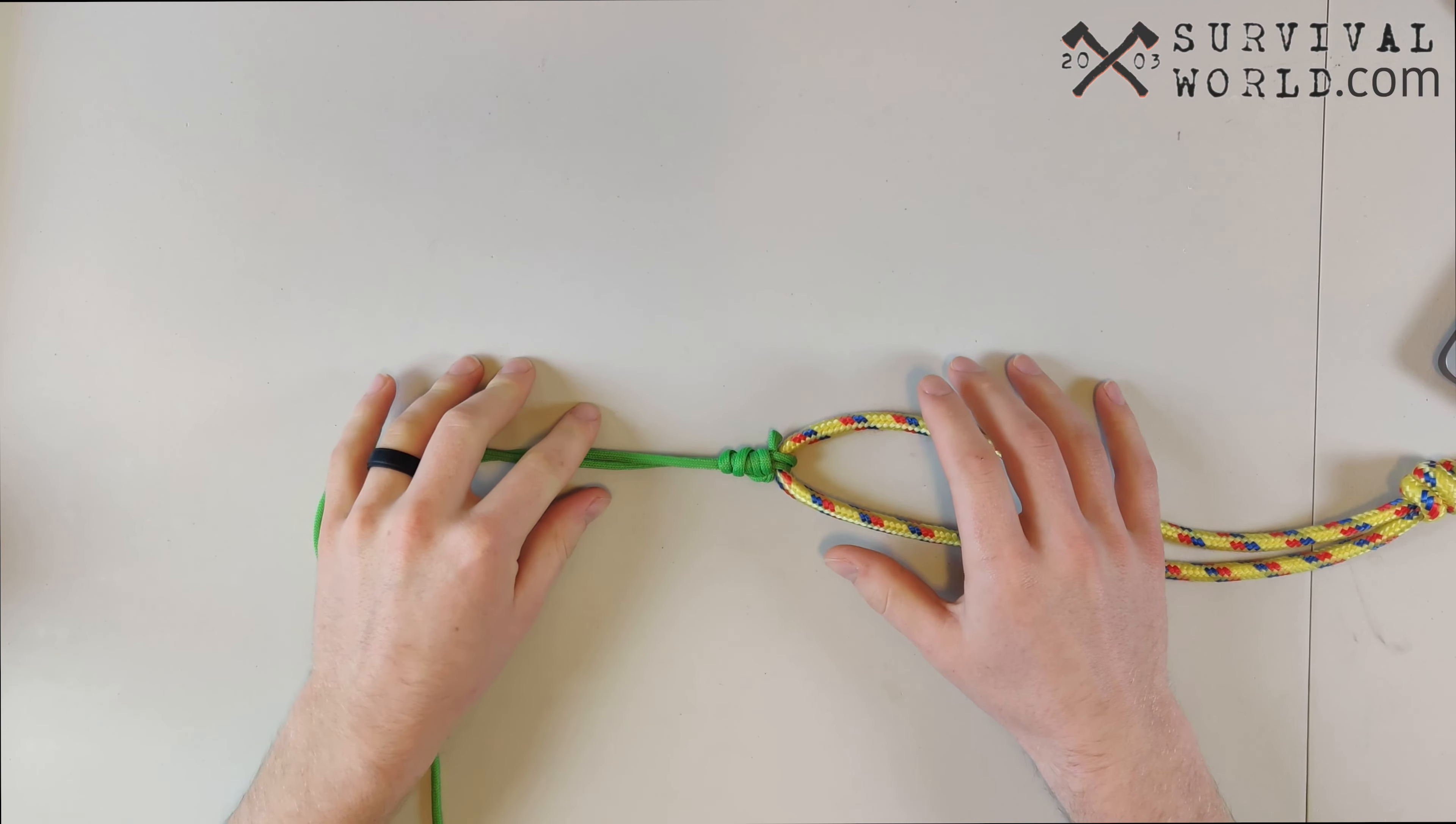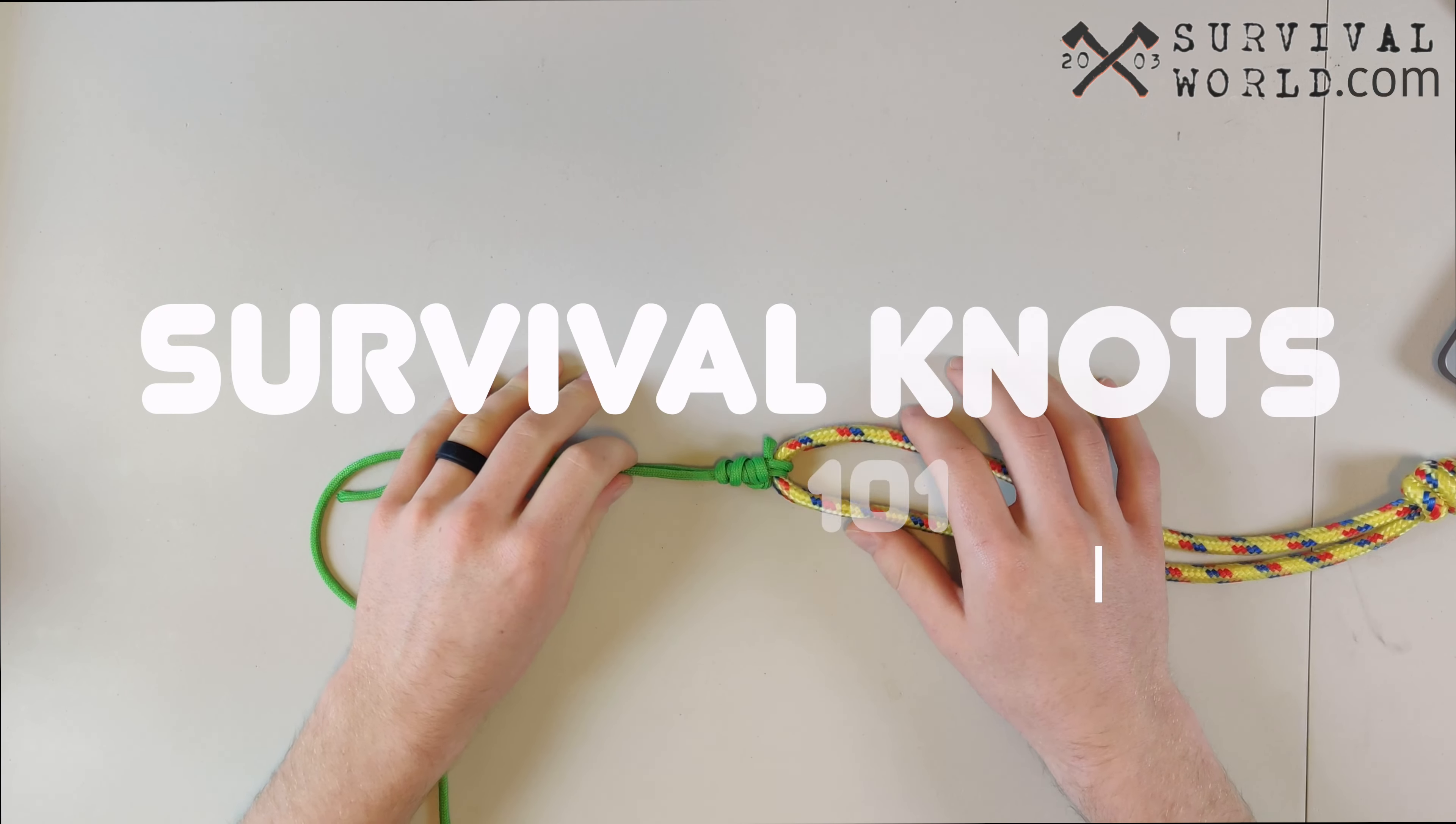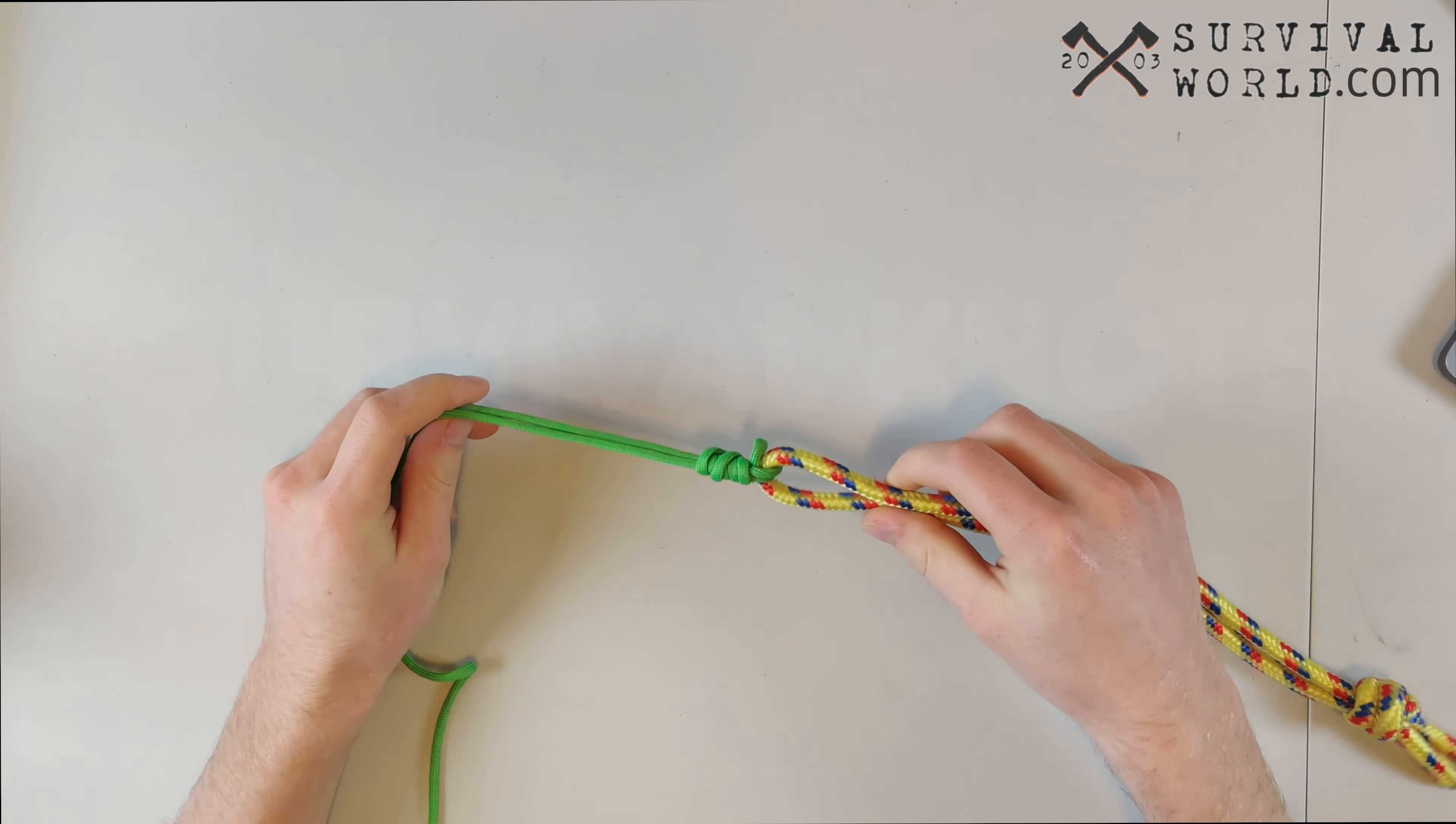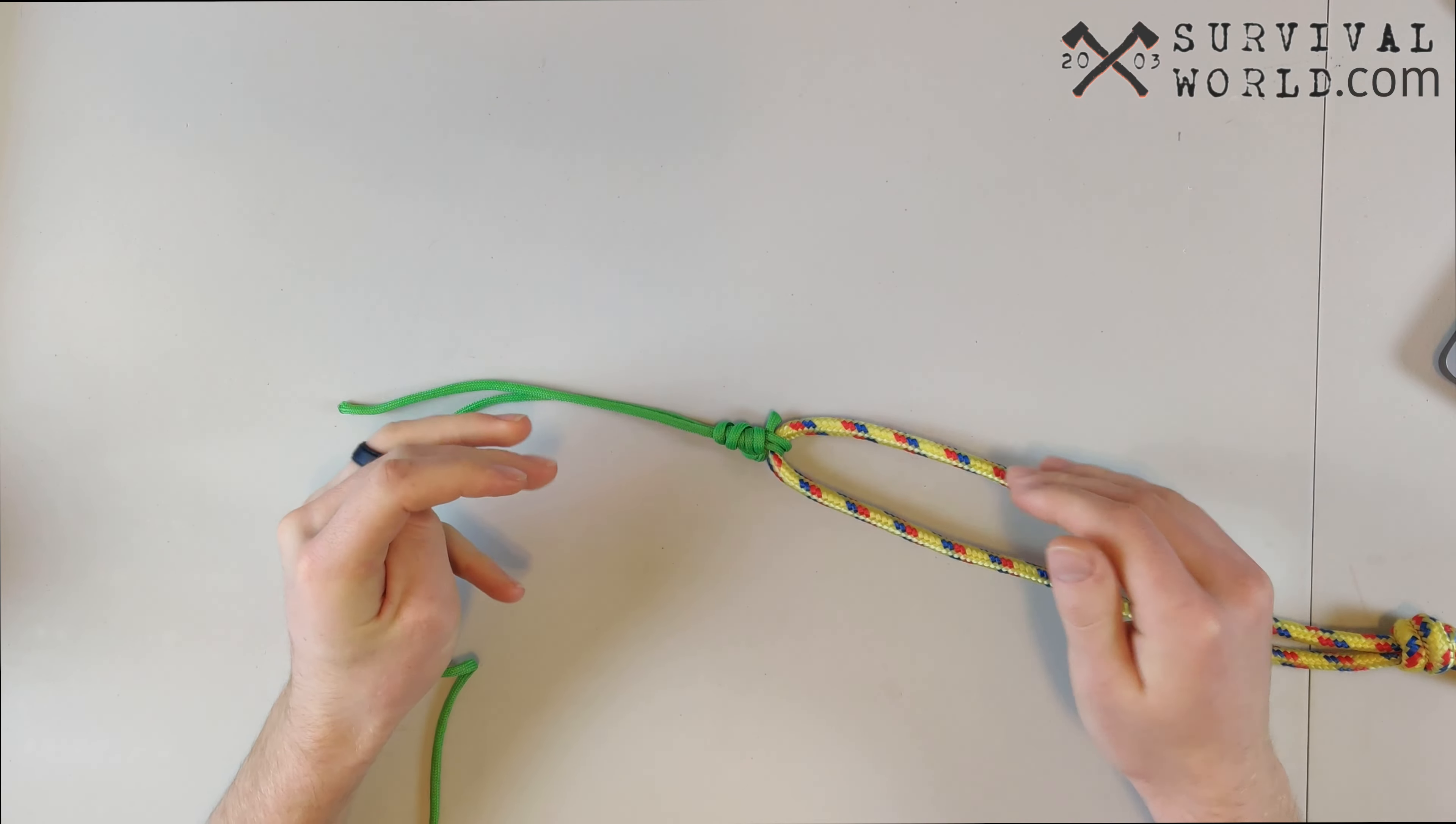Hey everybody, this is Tristan from Survival World and today's tutorial in our survival knot series is on the double cinch knot. The double cinch knot is a really common fishing knot, works great with ultra fine line and creates a very secure knot.